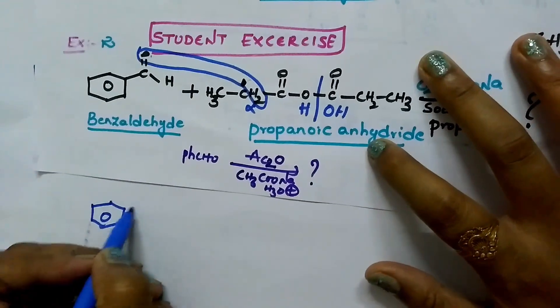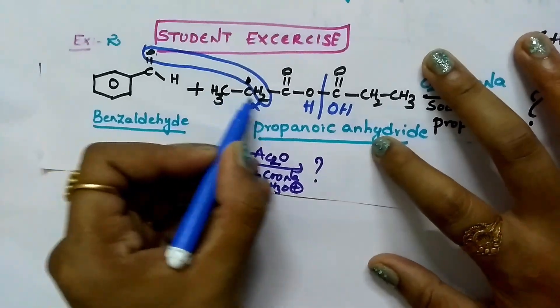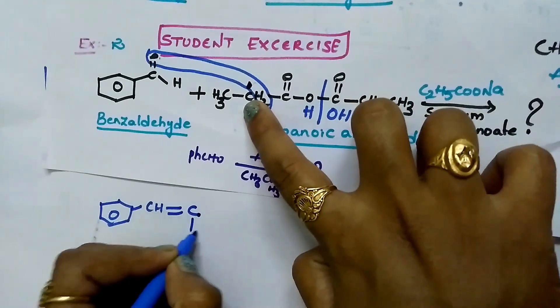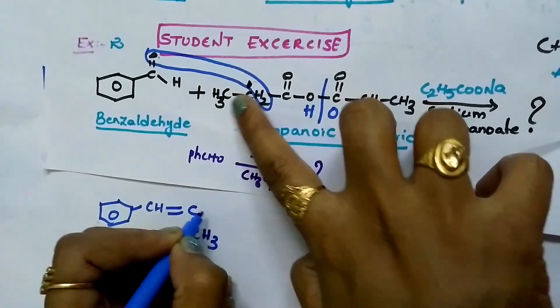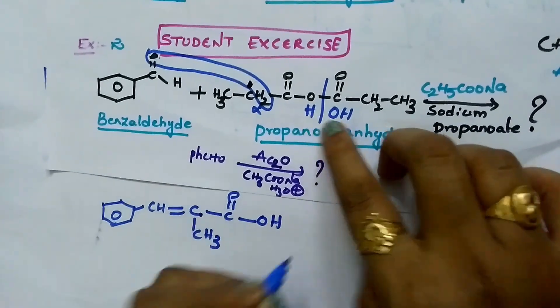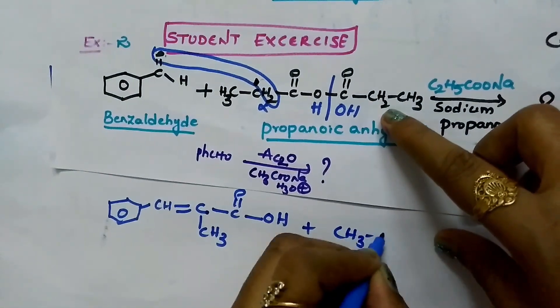Next, C, H will get double bond to this carbon. Next, CH3, write C double bond O, O, H plus propenoic acid.